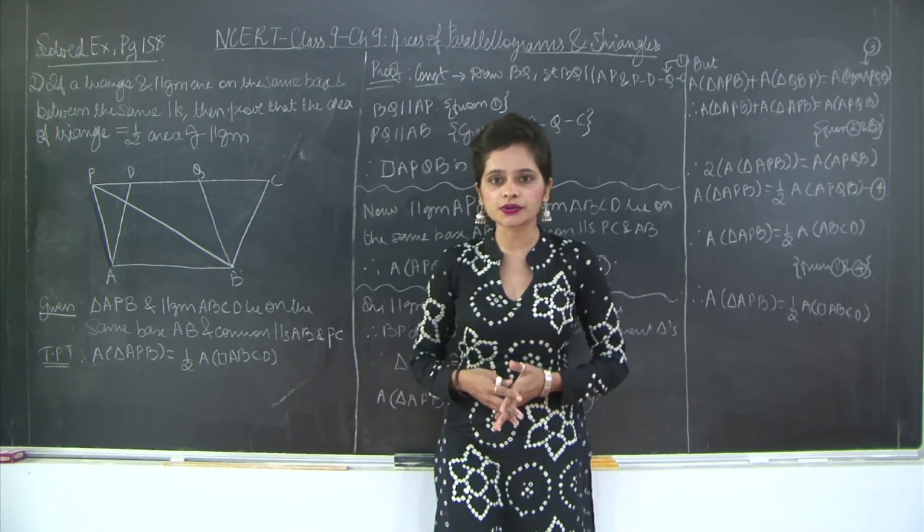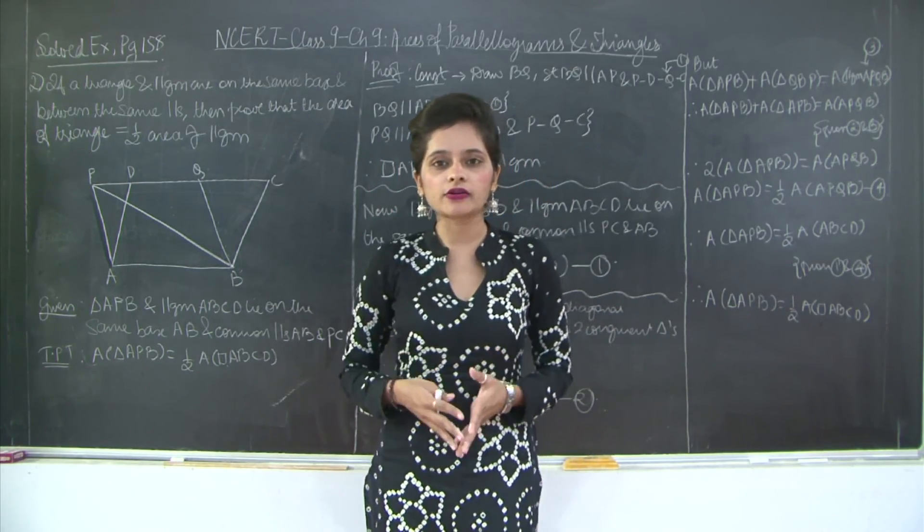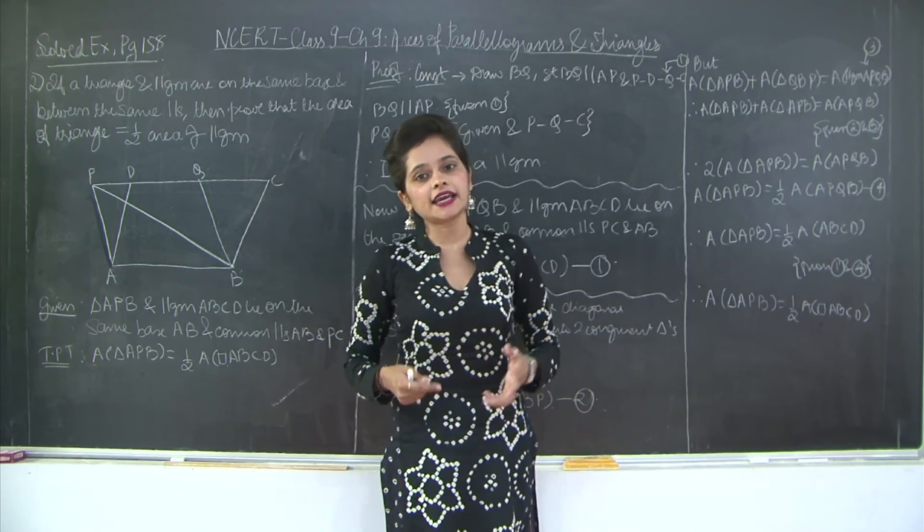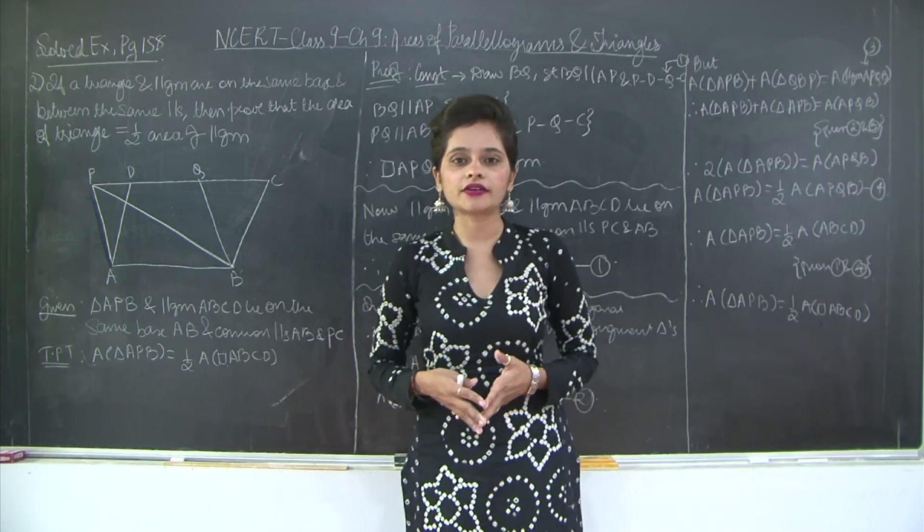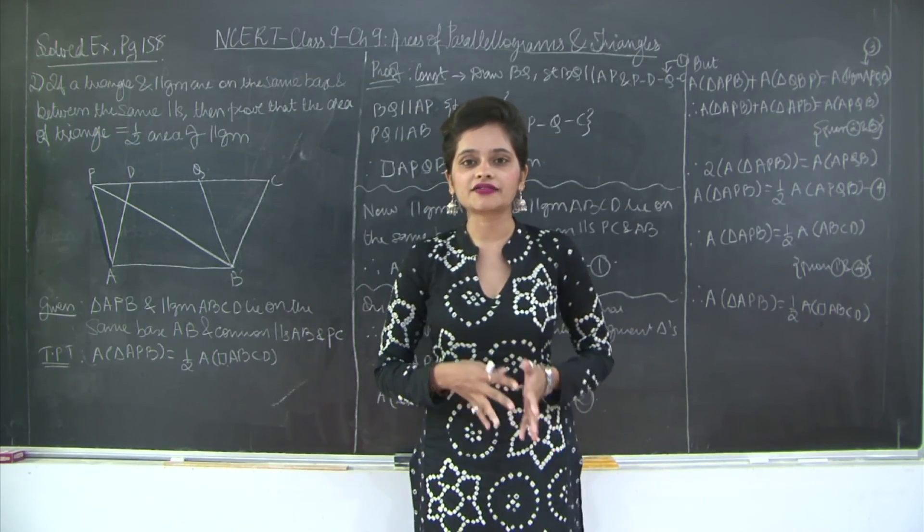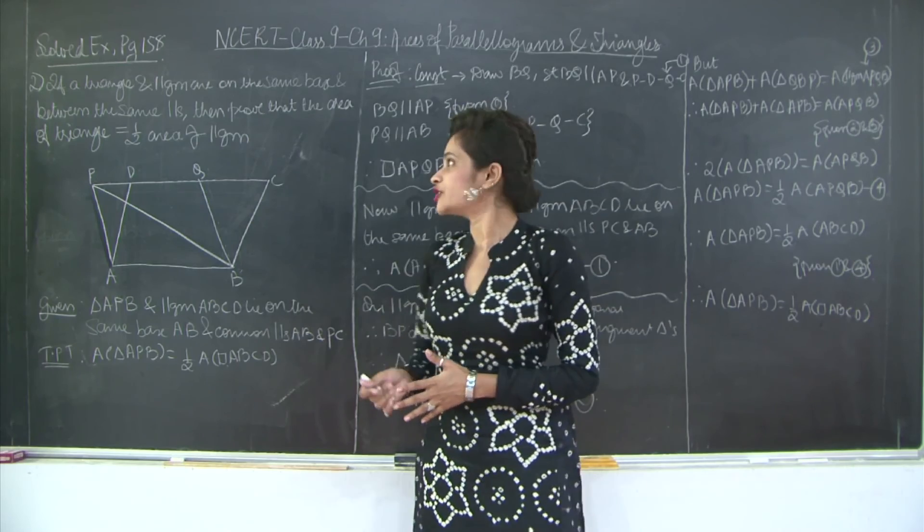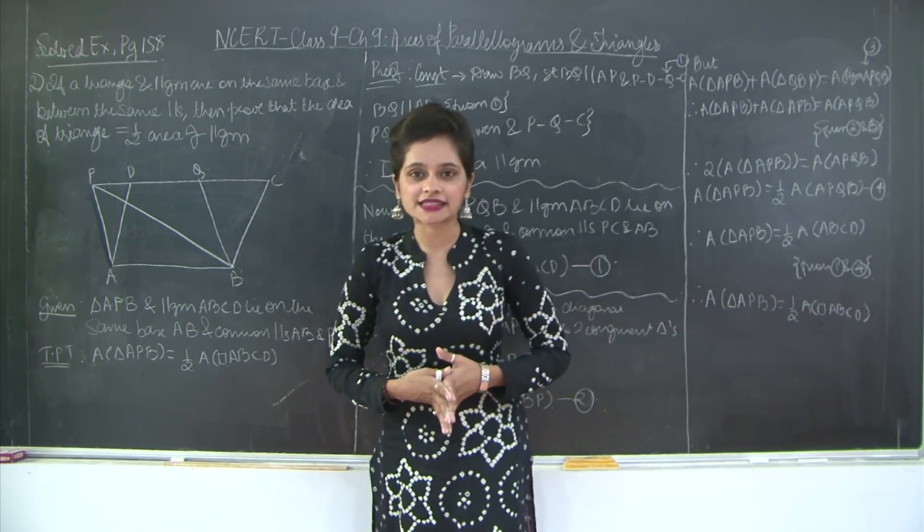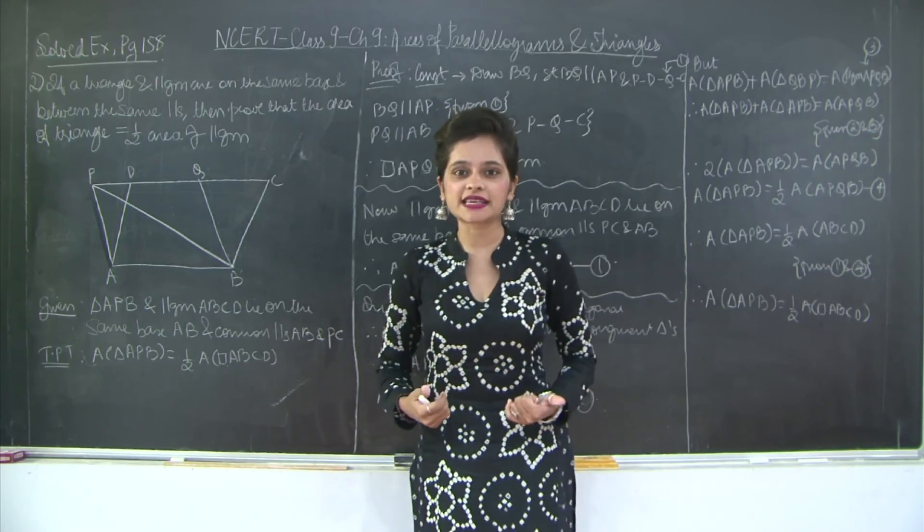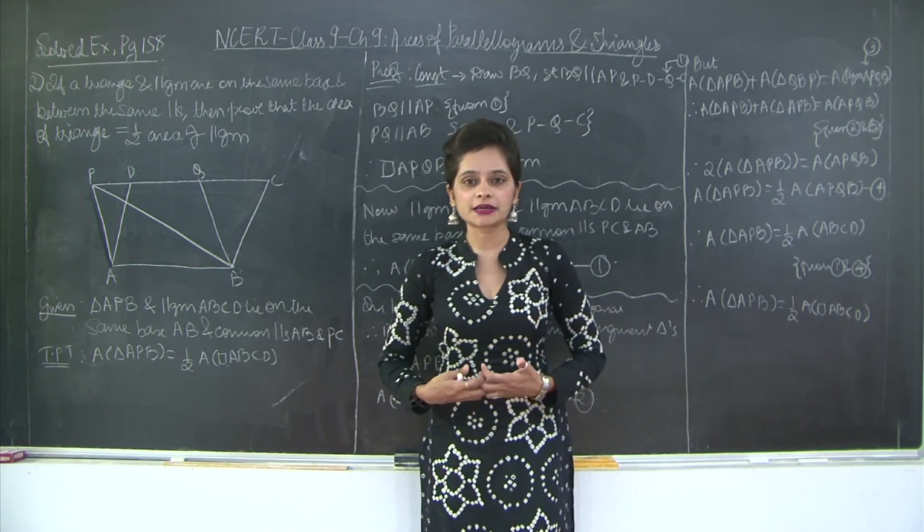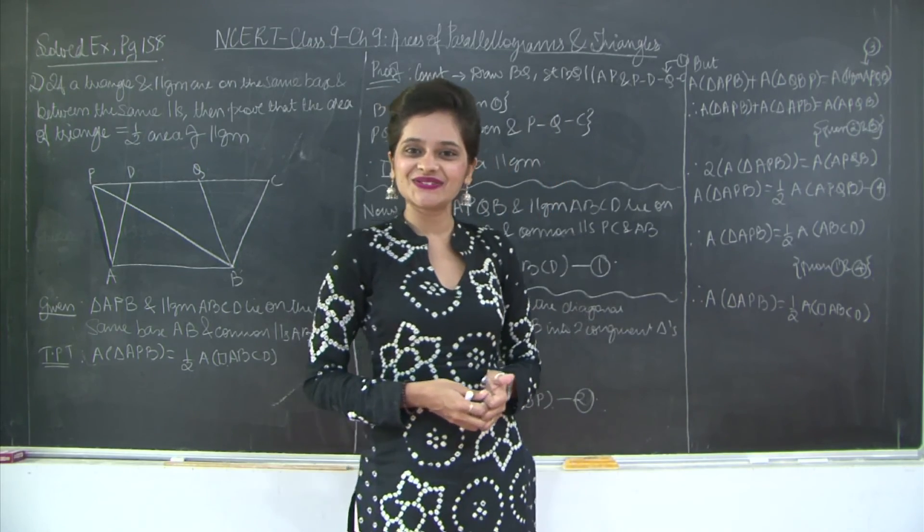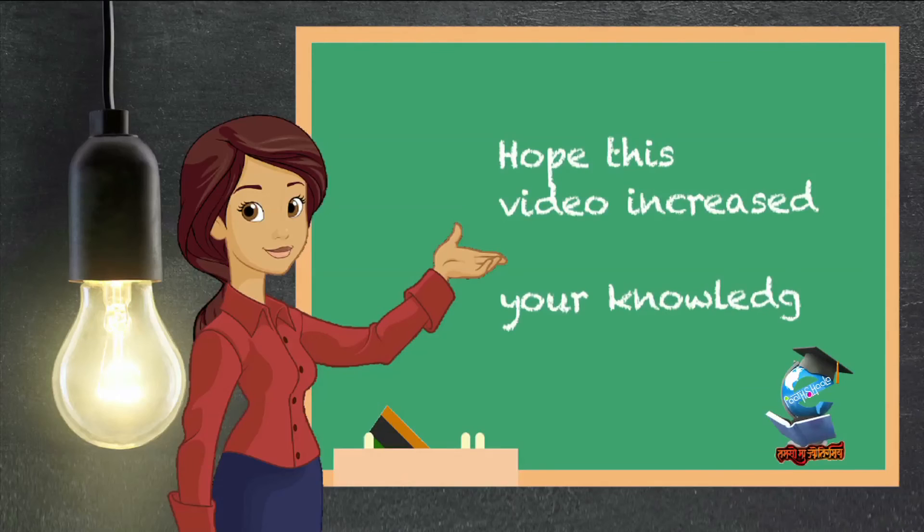In fact, this is a universal truth that if a triangle and a parallelogram lie on the same base and between the common parallels, then the area of the triangle is always half the area of the parallelogram. This was solved example number 2 before we get started with exercise 9.2, based on parallelograms on the same base and between common parallels. Thank you, hope this video increased your knowledge.